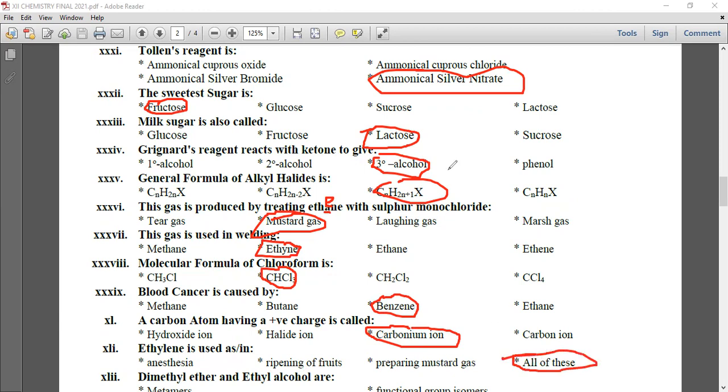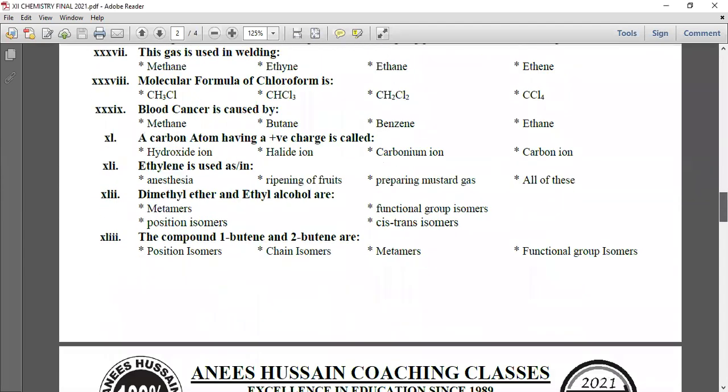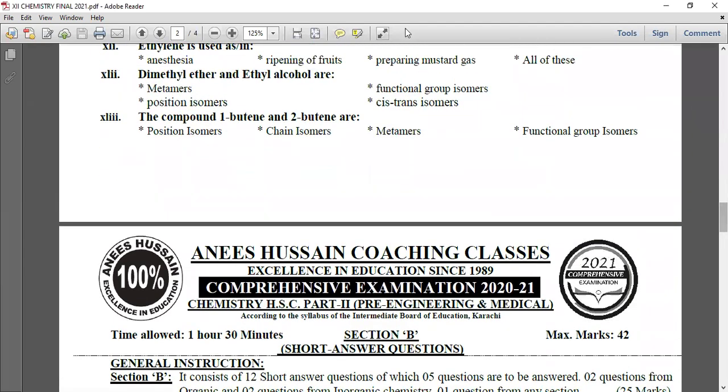Dimethyl ether and ethyl alcohol are functional group isomers. Alcohol and ether have different functional groups, so they are functional group isomers. The compounds 1-butene and 2-butene have the double bond at different positions, so the functional group position changes. Therefore, they are position isomers.